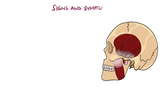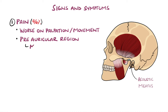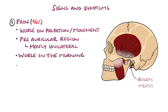Pain is one of the main features of temporo-mandibular joint disorder, seen in 96% of patients. This happens especially on palpation or with movement like chewing or yawning. It is usually one-sided and just anterior to the ear, with a tendency to be worse in the morning. The character is typically described as a poorly localised aching.